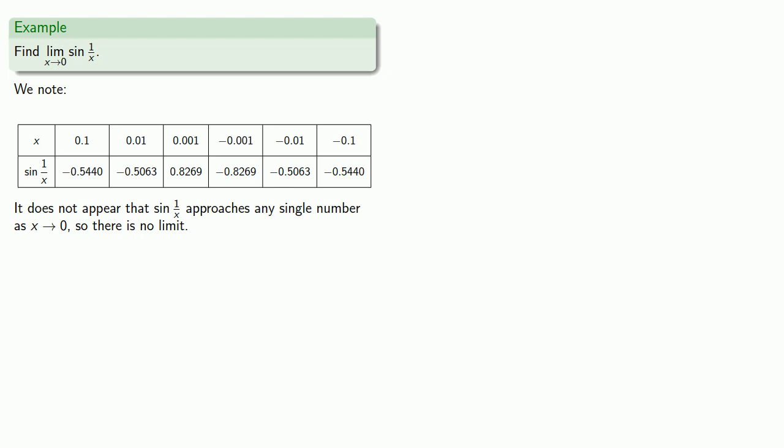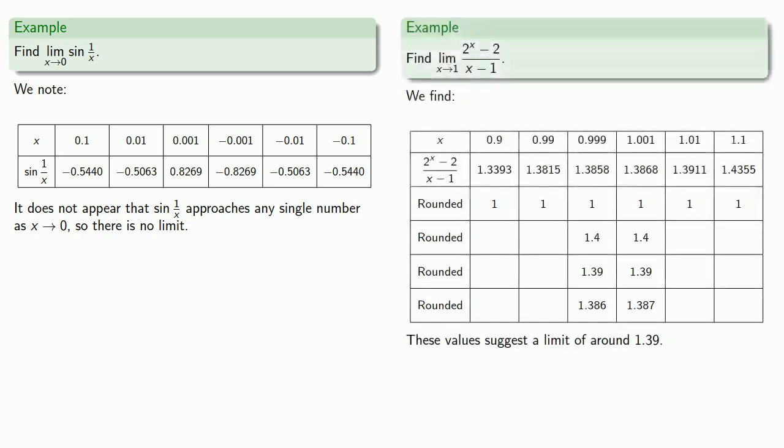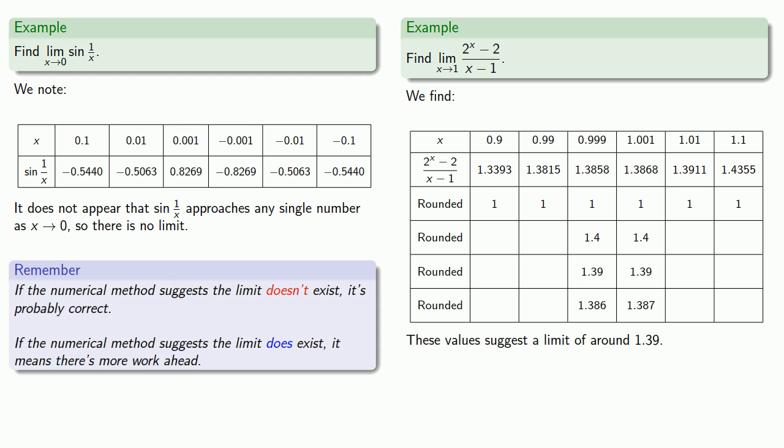Now there are some important limitations to this numerical method of finding limits. In some cases, we get something that might be a limit. And in other cases, we get a situation where we don't really seem to have any particular limit. So we might make the following general rule. If the numerical method suggests the limit doesn't exist, it's probably correct. On the other hand, if the numerical method suggests the limit does in fact exist, it means that there is more work ahead. We might not be able to do anything else with the problem, but we should always recognize that there is more that we need to do.